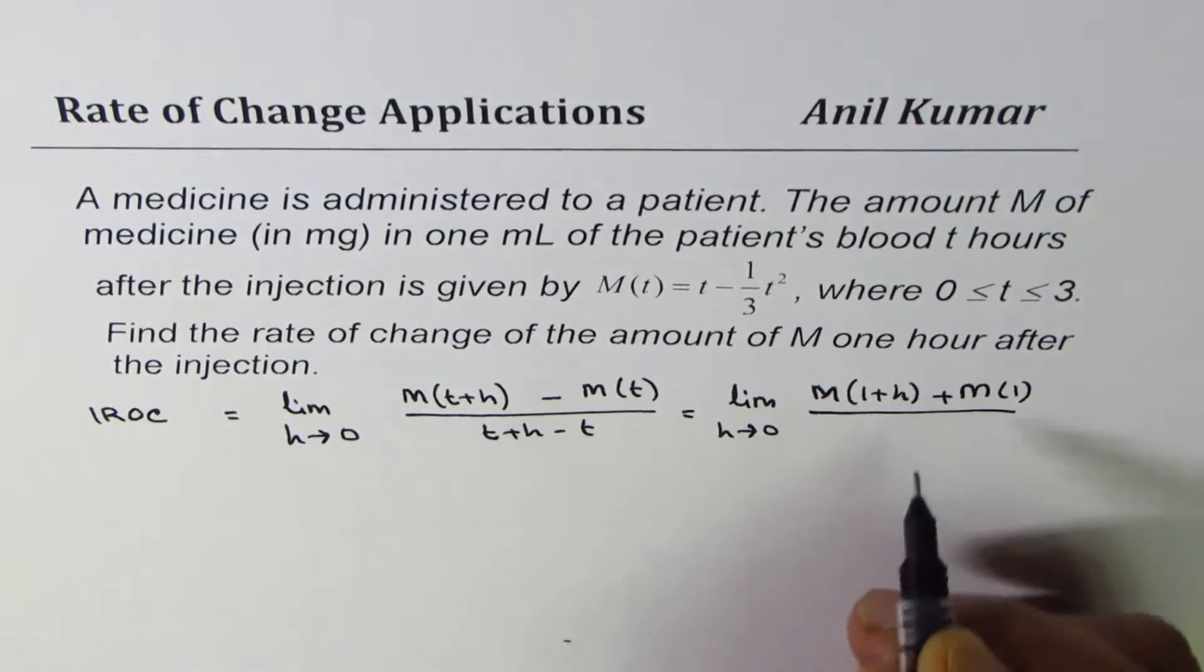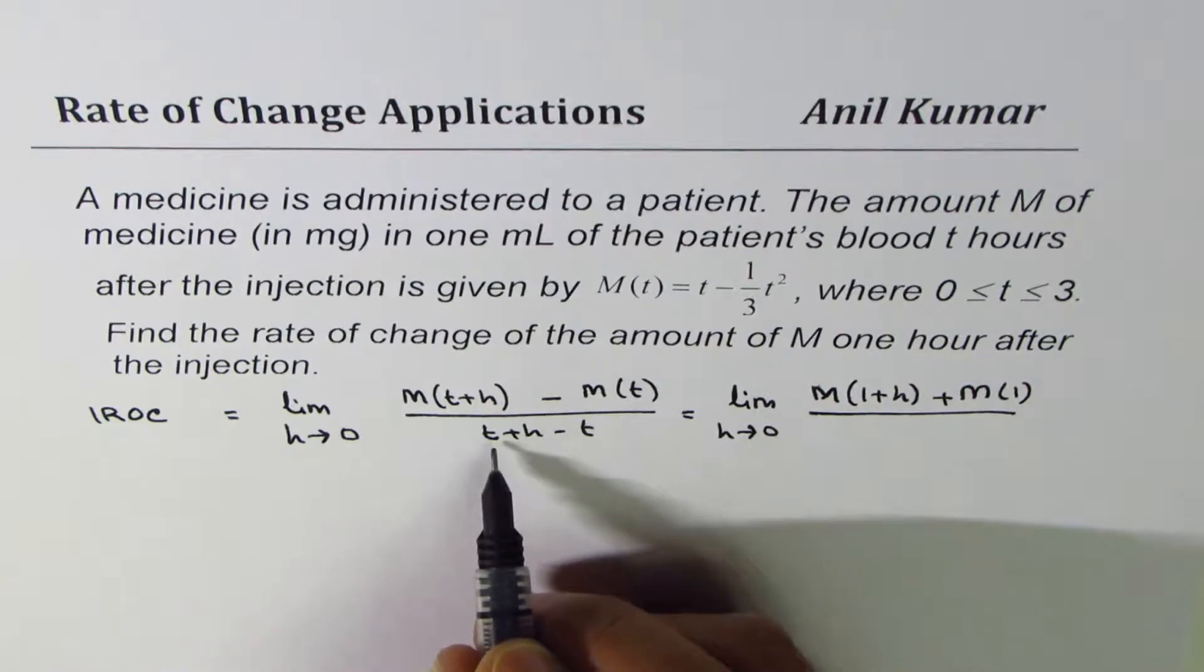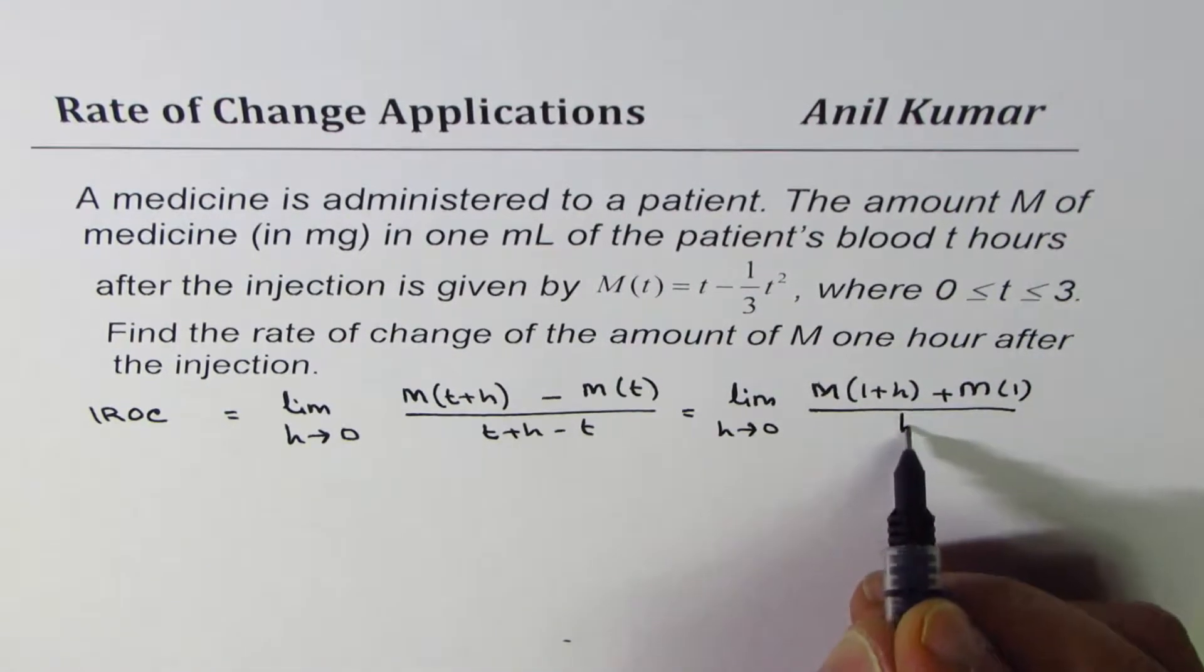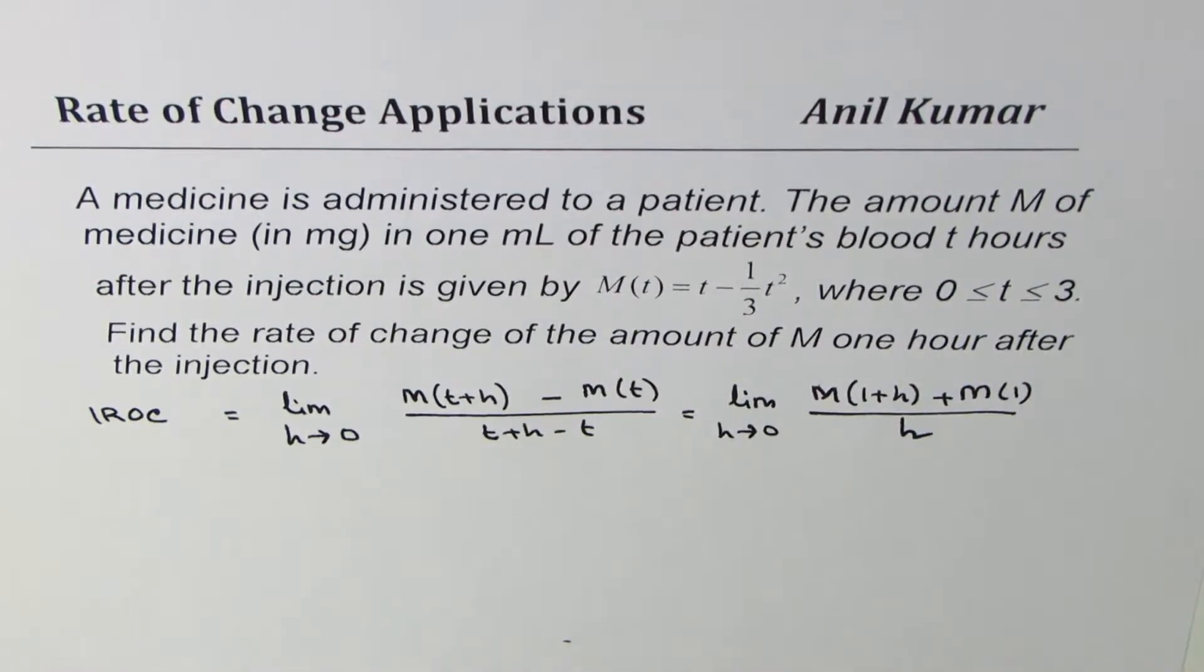Okay, so that becomes the difference quotient method to find the instantaneous rate of change, right? So let's work it out.